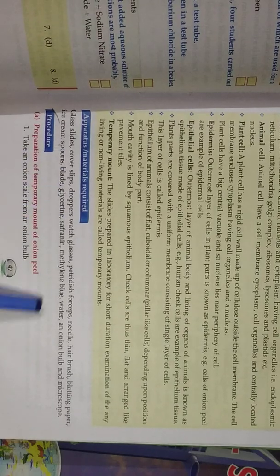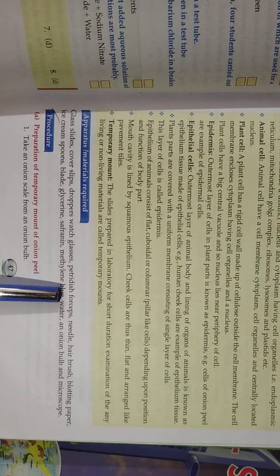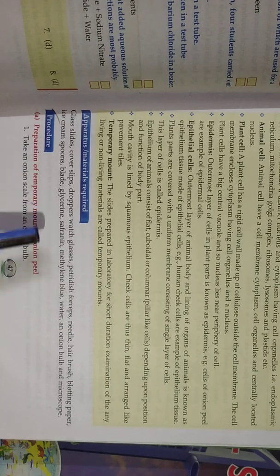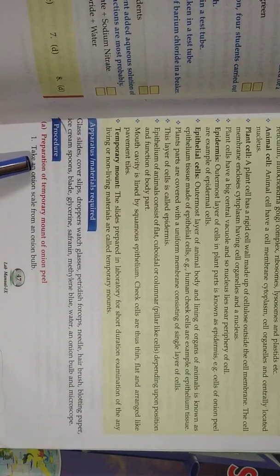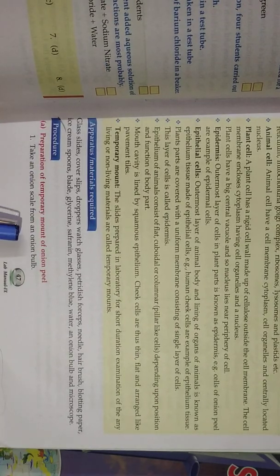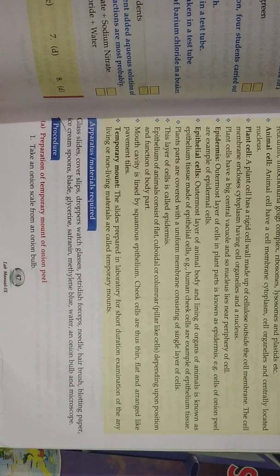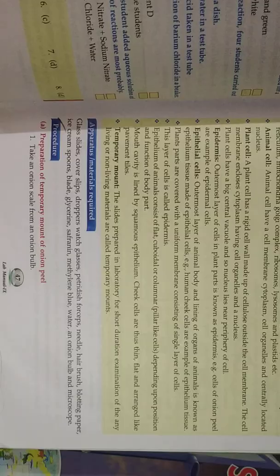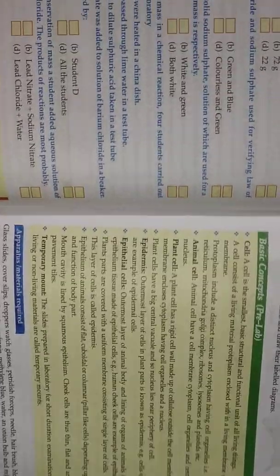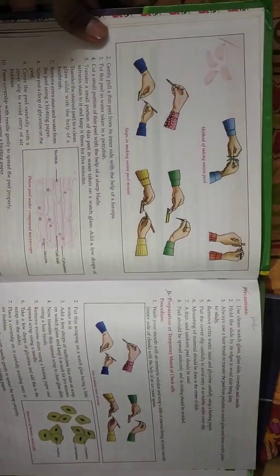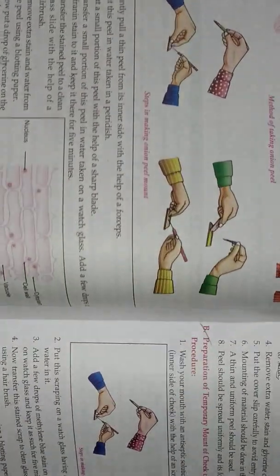Glass slides, cover slips, droppers, watch glass, and then you see what is this. And then procedure: preparation of temporary mount of onion peel. Take an onion scale from an onion bulb. And then next page, and here you see that.